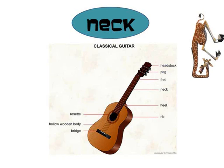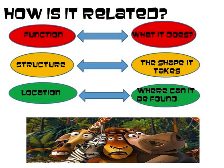I can see the neck of the guitar is as long as your neck. My neck is long, the neck of a guitar is long, and the neck of a bottle is kind of long but it's narrow. So we can say that it is related in terms of structure, based on the shape that it takes.